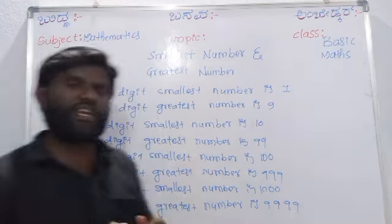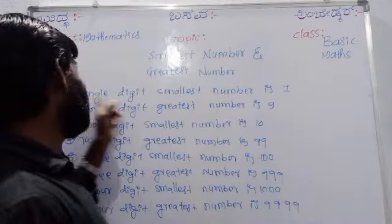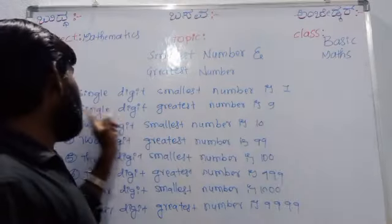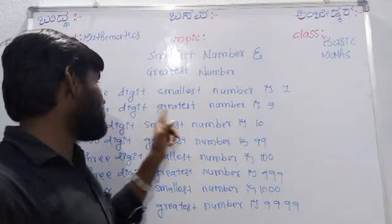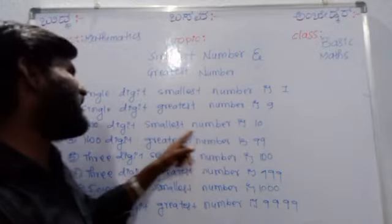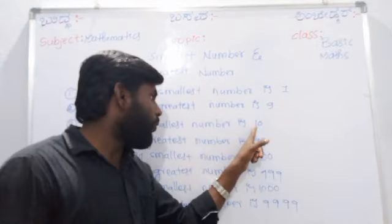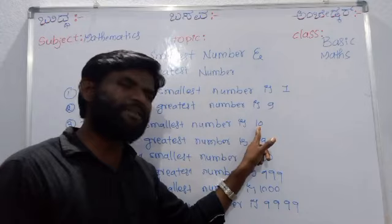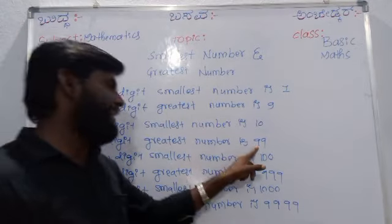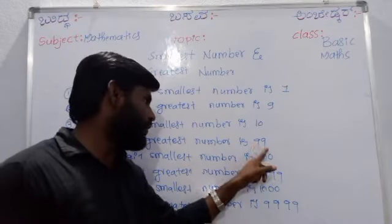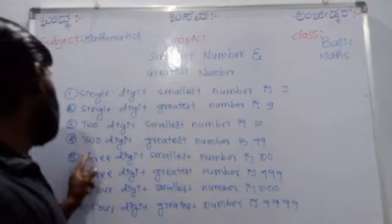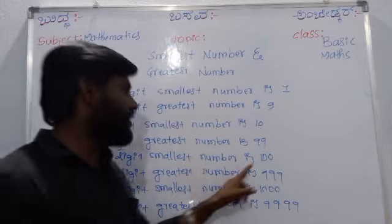Dear students, you may check once again. Single digit smallest number is 1. Single digit greatest number is 9 — only one digit. Two digit smallest number is 10. Two digit greatest number is 99 — two digits, one, two.